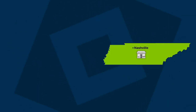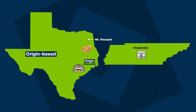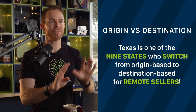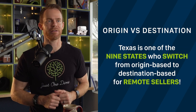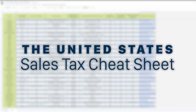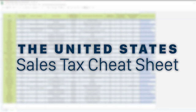So you're in Nashville and your product ships from a fulfillment center in Houston, Texas, to a customer in Mount Pleasant, Texas. Do you collect sales tax at the rate of Houston, where the product is shipping from, or Mount Pleasant, where the product is shipping to? Mount Pleasant — because Texas is one of the nine states who switch from origin to destination based for remote sellers. Because Texas is destination based for remote sellers, you collect sales tax at the rate of Mount Pleasant, Texas, the destination of the product. I'm going to show you where you can get a US sales tax cheat sheet that gives you a full breakdown of all these details.